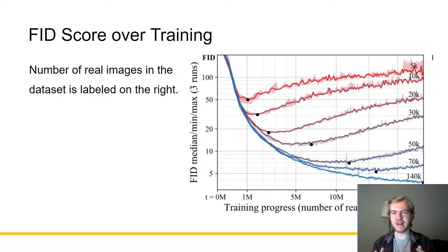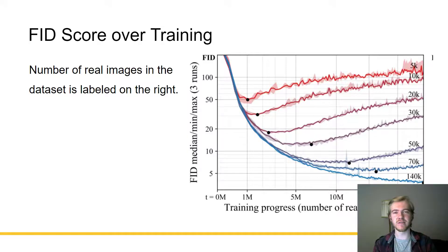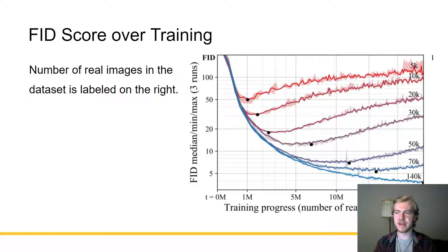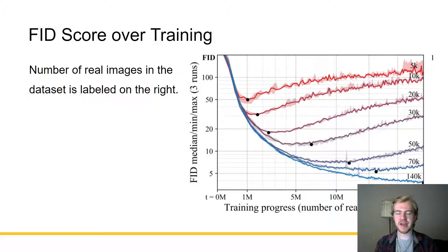Here is the FID score over training on various different sizes of the FFHQ dataset. The 140,000 image dataset includes every image flipped horizontally — that's how you get 140,000 images. As you can see, on the smaller datasets of 5,000 and 10,000, GAN performance peaks quite early and then slowly hampers off. With something as large as 140,000, it can be shown many images — up to 25 million over time — and still not peak until the very end.